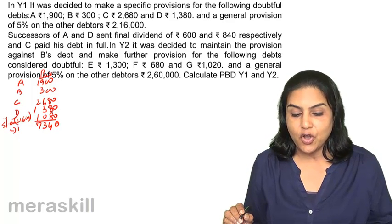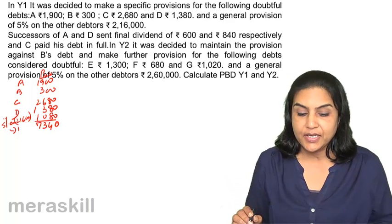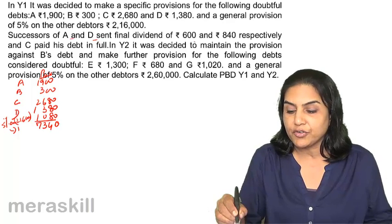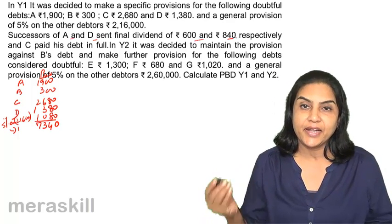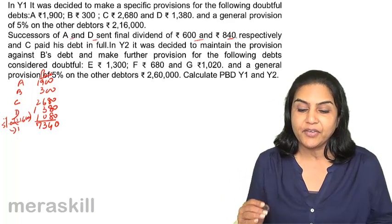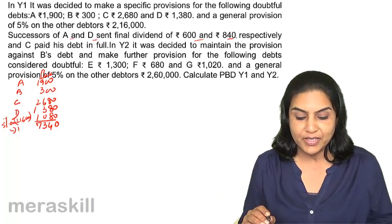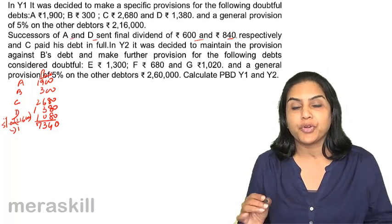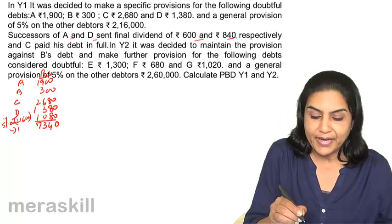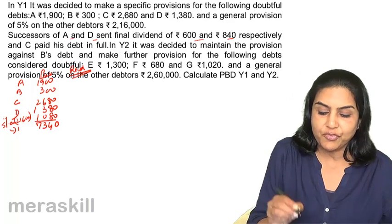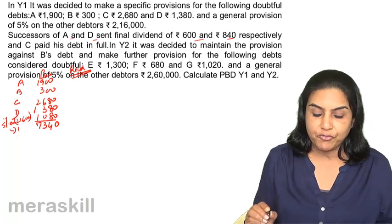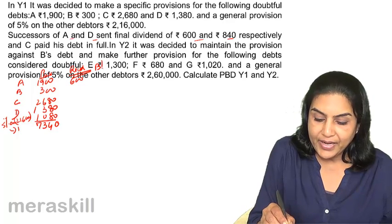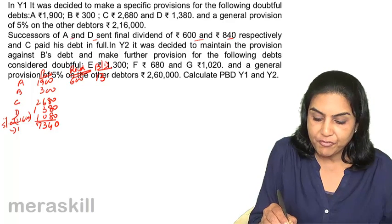In the next year, successors of A and D sent a final dividend, meaning A and D have been declared insolvent. The amount received from A is 600; the amount due was 1,900, so 1,300 is written off as bad debts.